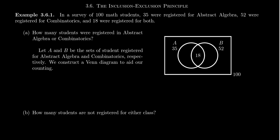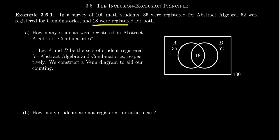Before we state what that is, I actually want to provide an example to motivate not just what the theorem is, but also simultaneously prove it. So imagine a fictitious survey was conducted among 100 math students, and 35 of the students were registered for abstract algebra, and 52 students were registered for combinatorics — the mathematics of counting things. We're doing a combinatorics problem right now. And imagine that 18 of those 100 math students surveyed were registered for both classes in the same semester.